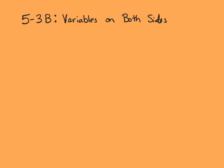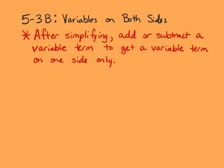Lesson 53B, Variables on Both Sides. This lesson is going to continue teaching how to solve multi-step equations. However, this lesson will not be tested on a unit test this nine weeks. When solving these equations, after you've simplified, you're going to add or subtract one of the variable terms to get a variable term on one side of the equation only.